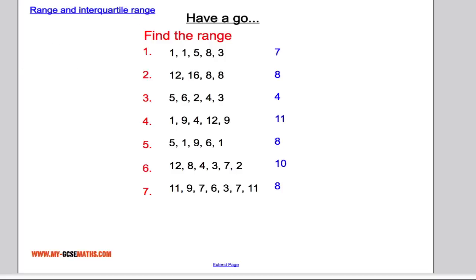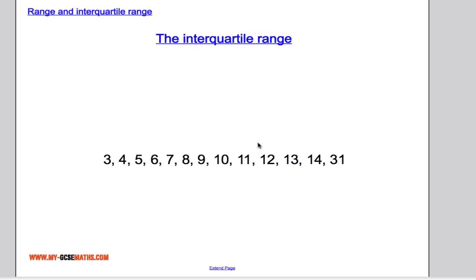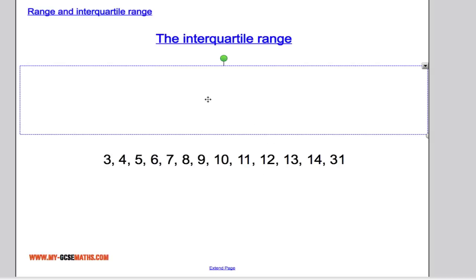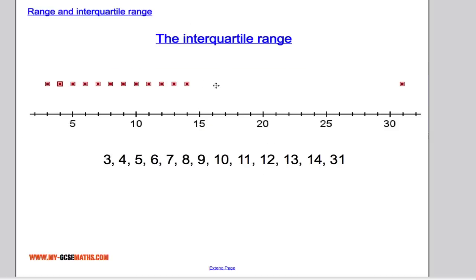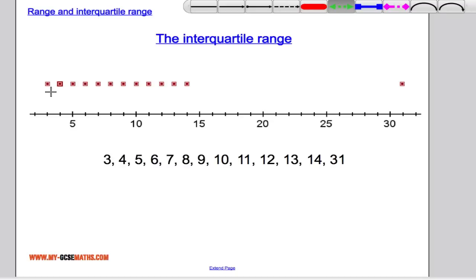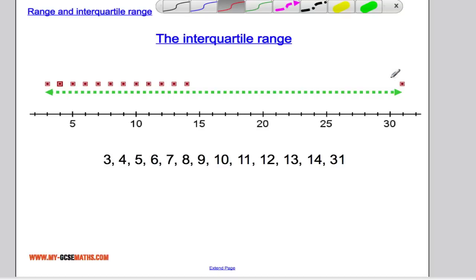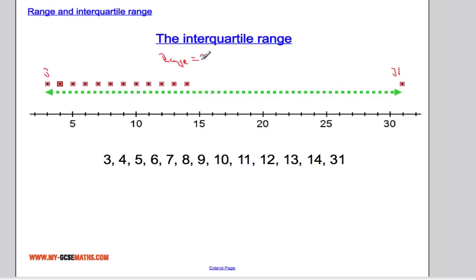Let's have a look at what the interquartile range is. Like I said before, the range will tell us how spread out the data is. However, it's not always the best measure to use. Suppose I've got a data set here — if I work out the range, it tells me the data is spread out: that's 31 and that's 3, so the range would be 28. But you can clearly see from the diagram that it's not a true representation, because most of the data is down here and we have one extreme value all the way up here. So it's not the best measure to use.